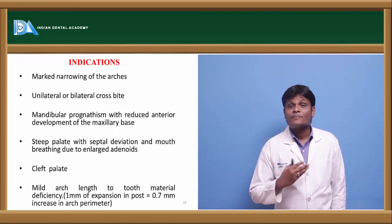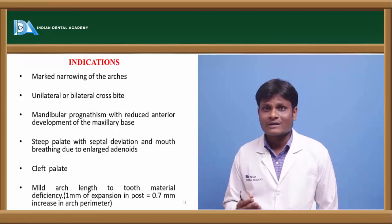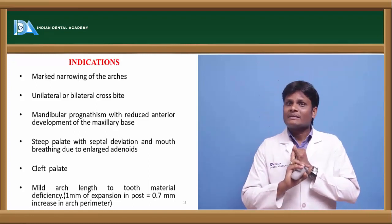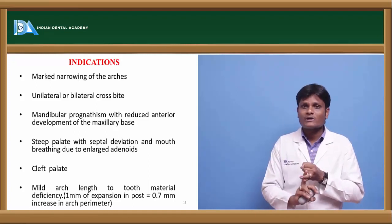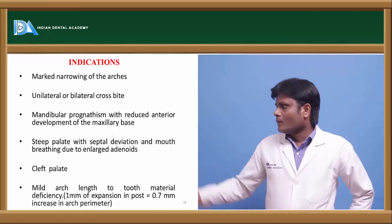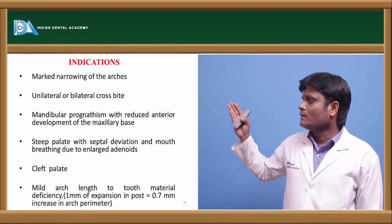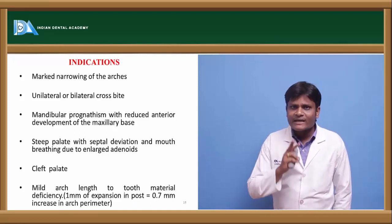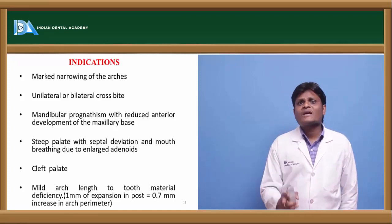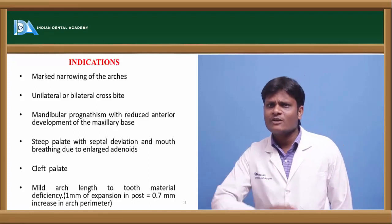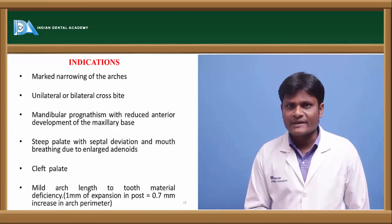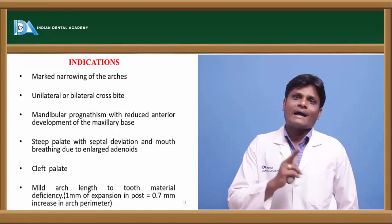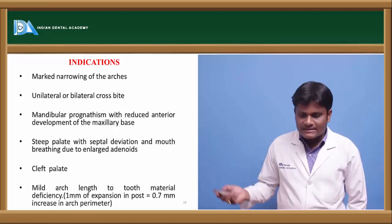The methods of gaining space for correction of malocclusion in orthodontics are proximal stripping, extractions, and expansions. Expansion can be used as a method of obtaining space to reduce crowding and proclination. 1 mm of expansion achieves about 0.7 mm of increase in arch perimeter — so if we expand 5 mm, we get approximately 4.5 mm of space — which can be utilized for correction of crowding or proclination.